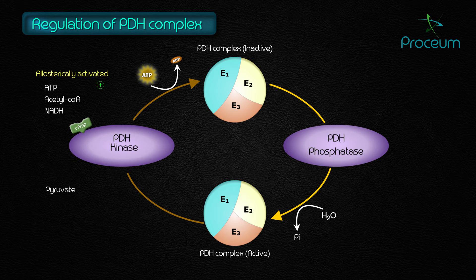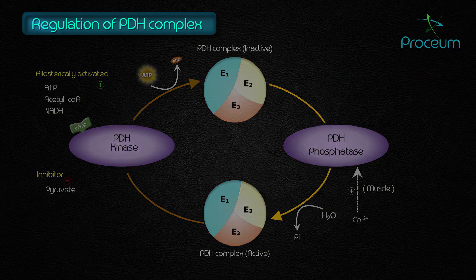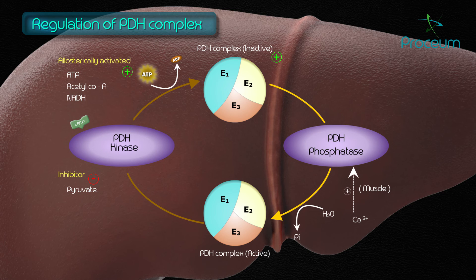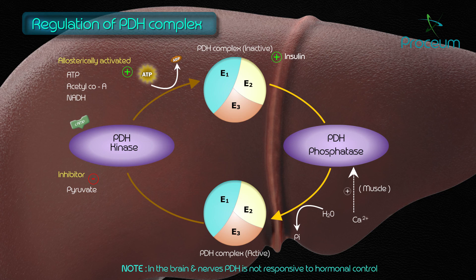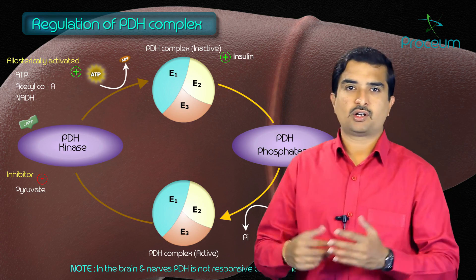Pyruvate is a potent inhibitor of pyruvate dehydrogenase kinase; when pyruvate concentrations are elevated, E1 will be maximally active. Calcium is a strong activator of pyruvate dehydrogenase phosphatase, stimulating E1 activity and playing an important role in skeletal muscle, where calcium released during contraction stimulates the PDH complex and thereby energy production. Pyruvate dehydrogenase in the liver is activated by insulin, whereas in the brain and nerves the enzyme is not responsive to hormones.